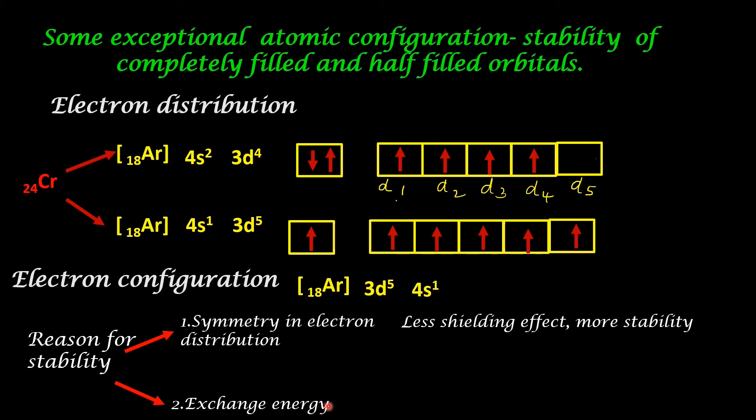We will compare the number of exchanges possible for these two options. Let us take up the first case. D1 electron can have three exchanges. What about D2? It can have two exchanges. D3 electron can have only one exchange. So the total becomes 3 plus 2 plus 1 equal to six possible exchanges.